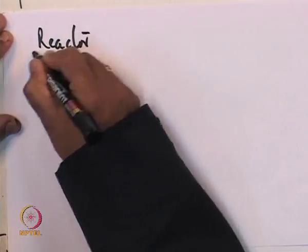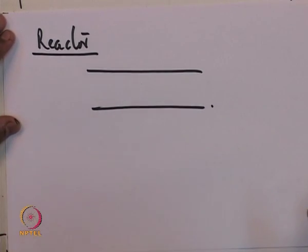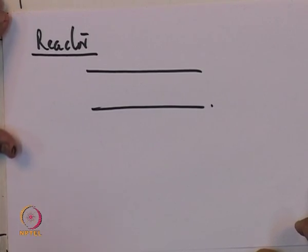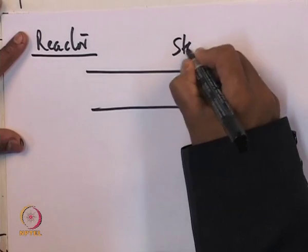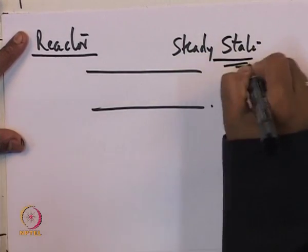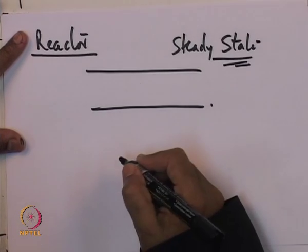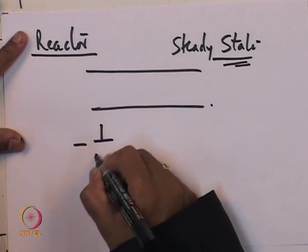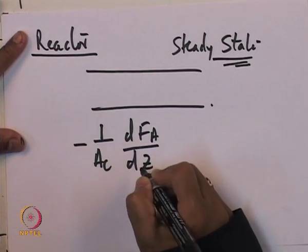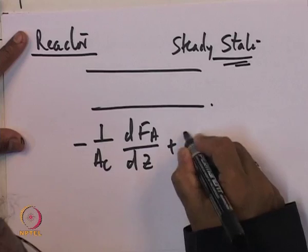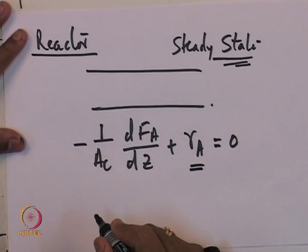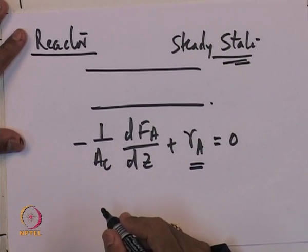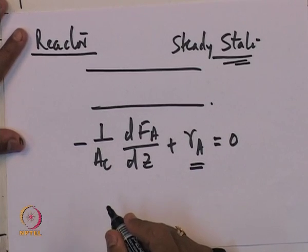Now let's consider the reactive case — reaction happening in a tubular reactor. Our main aim is to design a reactor; what we have done so far is characterize the flow pattern. At steady state we write a differential balance: dF_A/dz = r_A, where r_A is the rate of reaction — it could be first order, second order, or any order.